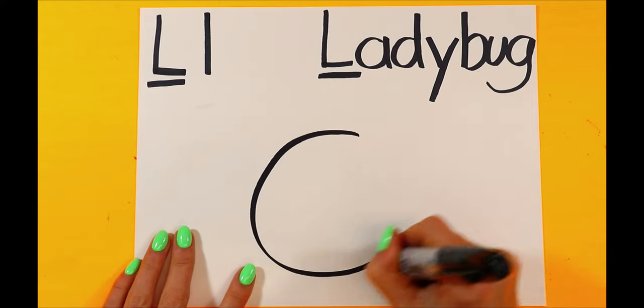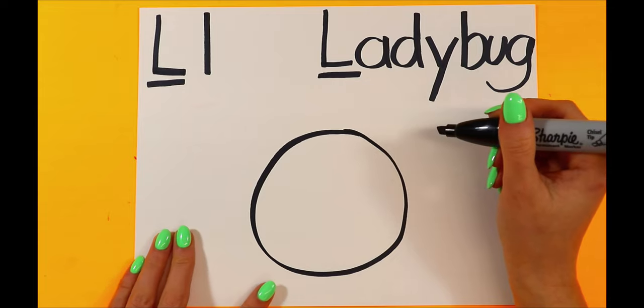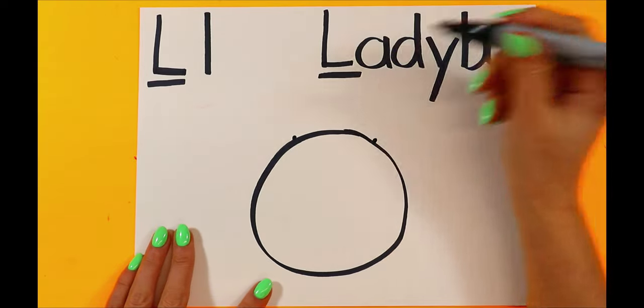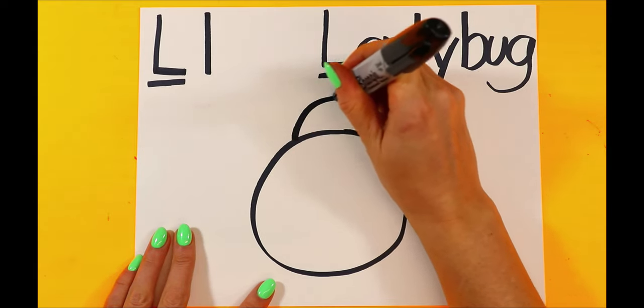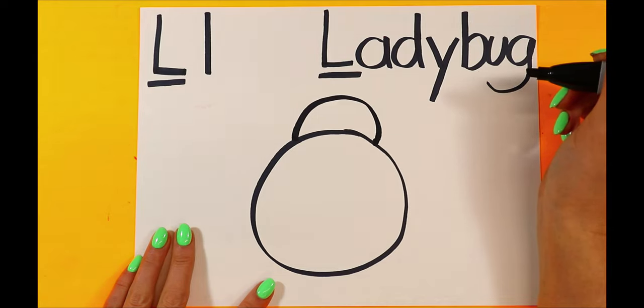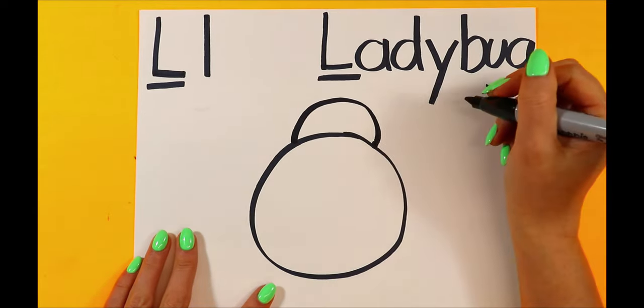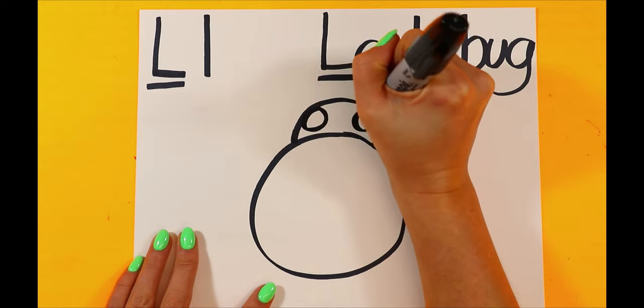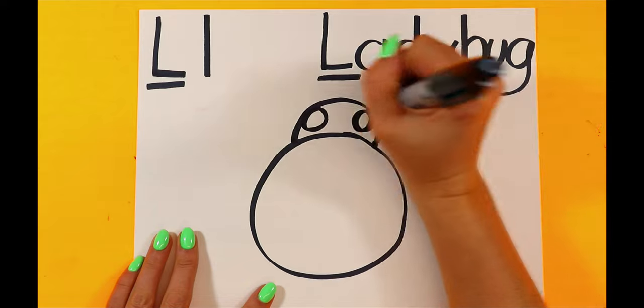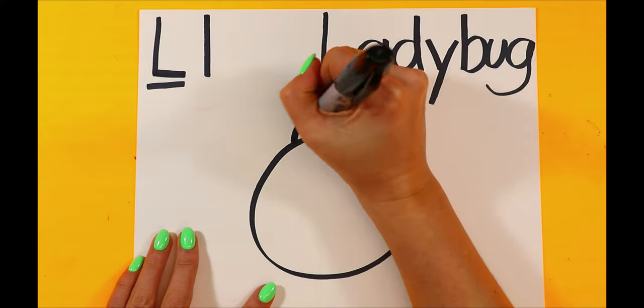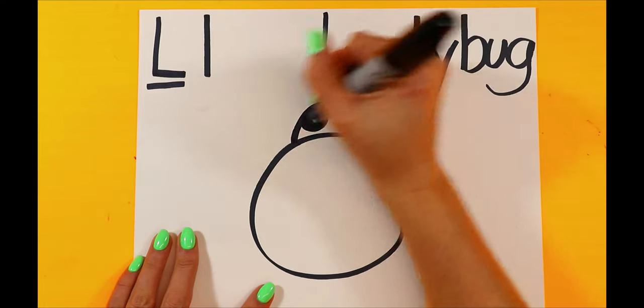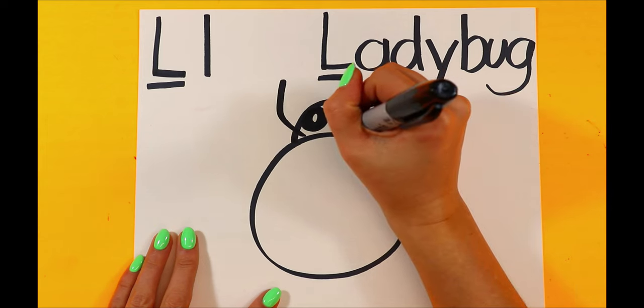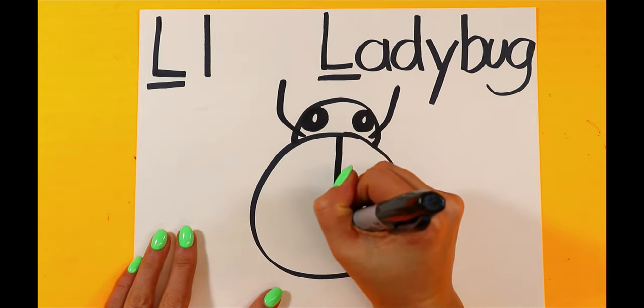Let's draw a ladybug. Let's begin with a circle. At the top, we're going to draw a dot on either side. And then we're going to connect the two dots with a curving line. On each side of the head, we're going to draw an eye. And then we'll color in the eye, leaving a little bit of white. We'll draw the antennae.